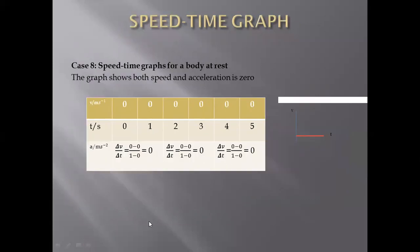A horizontal line along the X-axis in a speed-time graph means the body is not moving — it is at rest. Speed is zero, velocity is zero, and therefore acceleration is also zero.